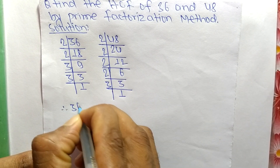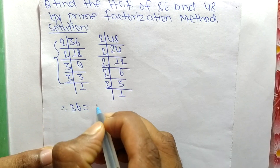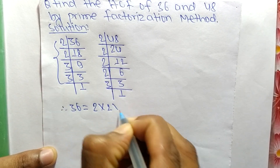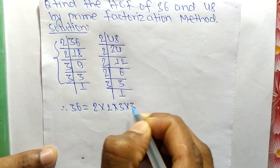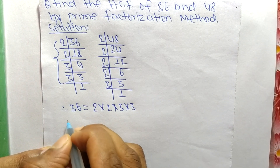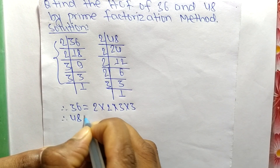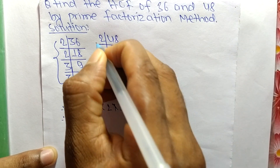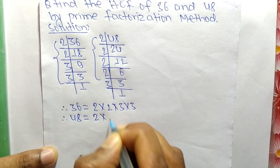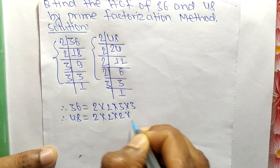So now from these prime factors we can write: 36 is equal to 2 times 2 times 3 times 3. Likewise, from the prime factors, 48 is equal to 2 times 2 times 2 times 2 times 3.